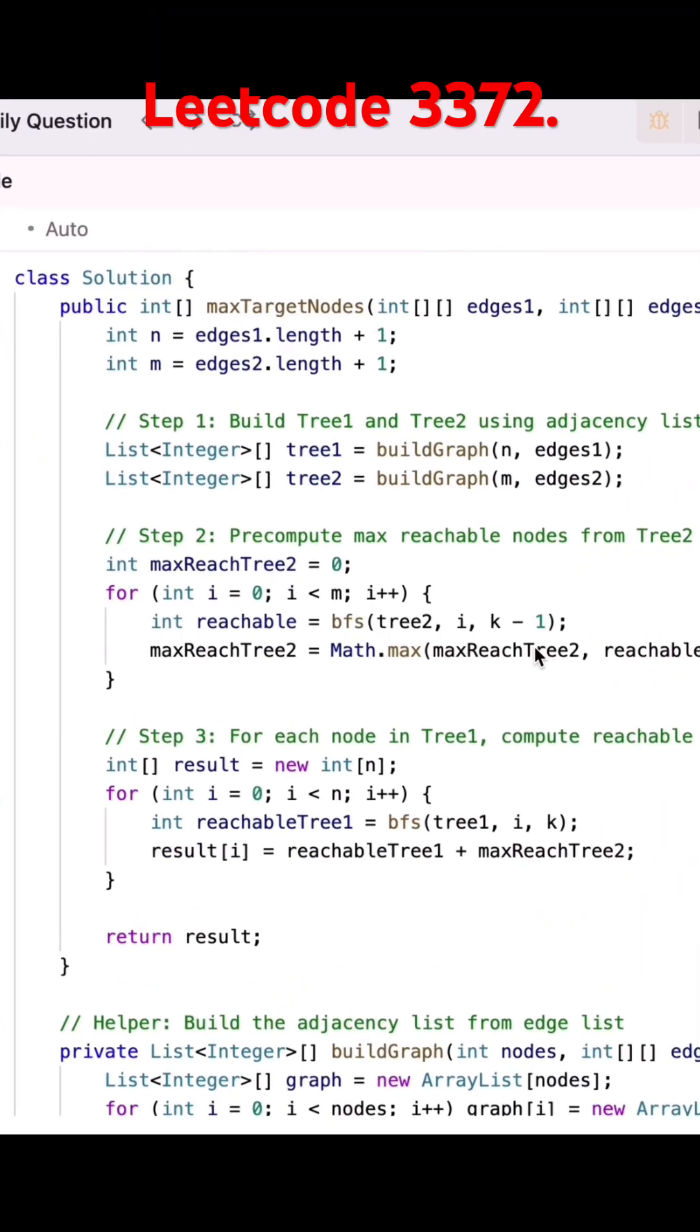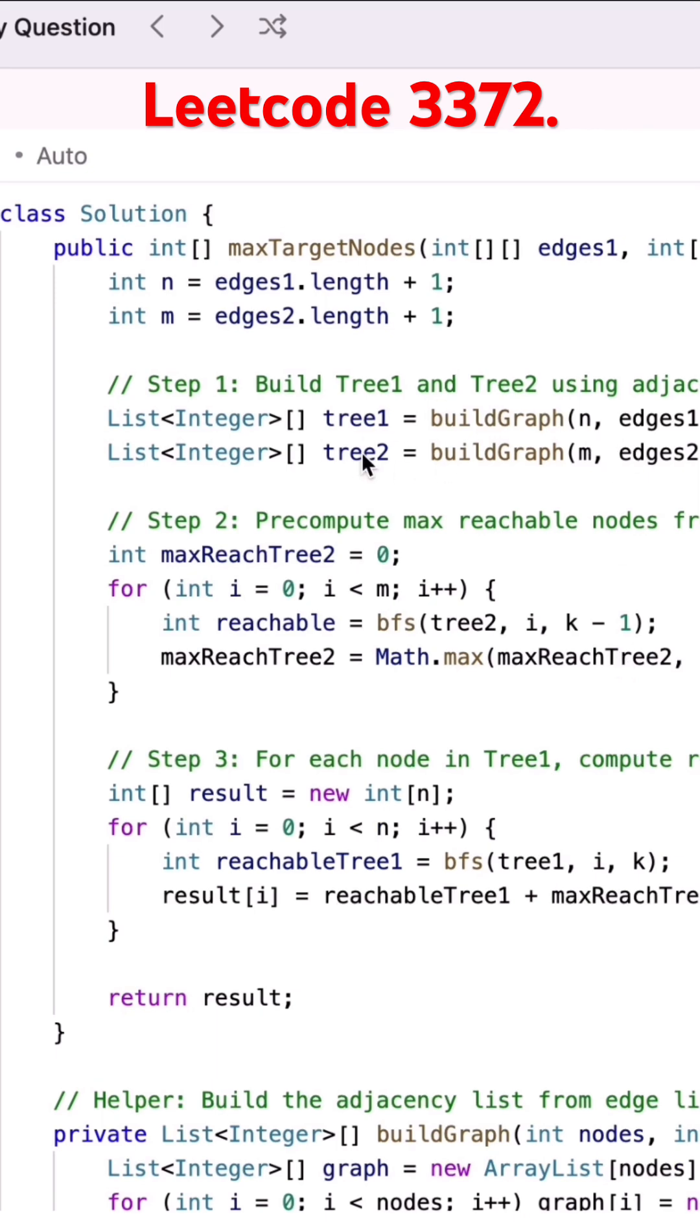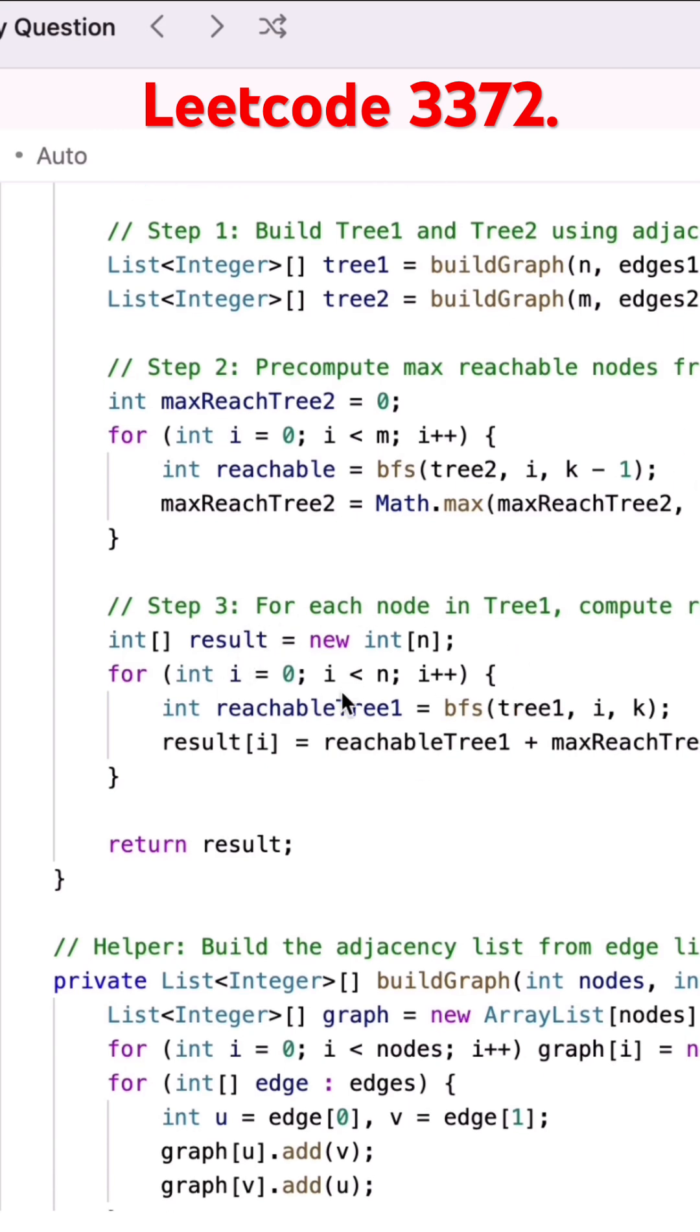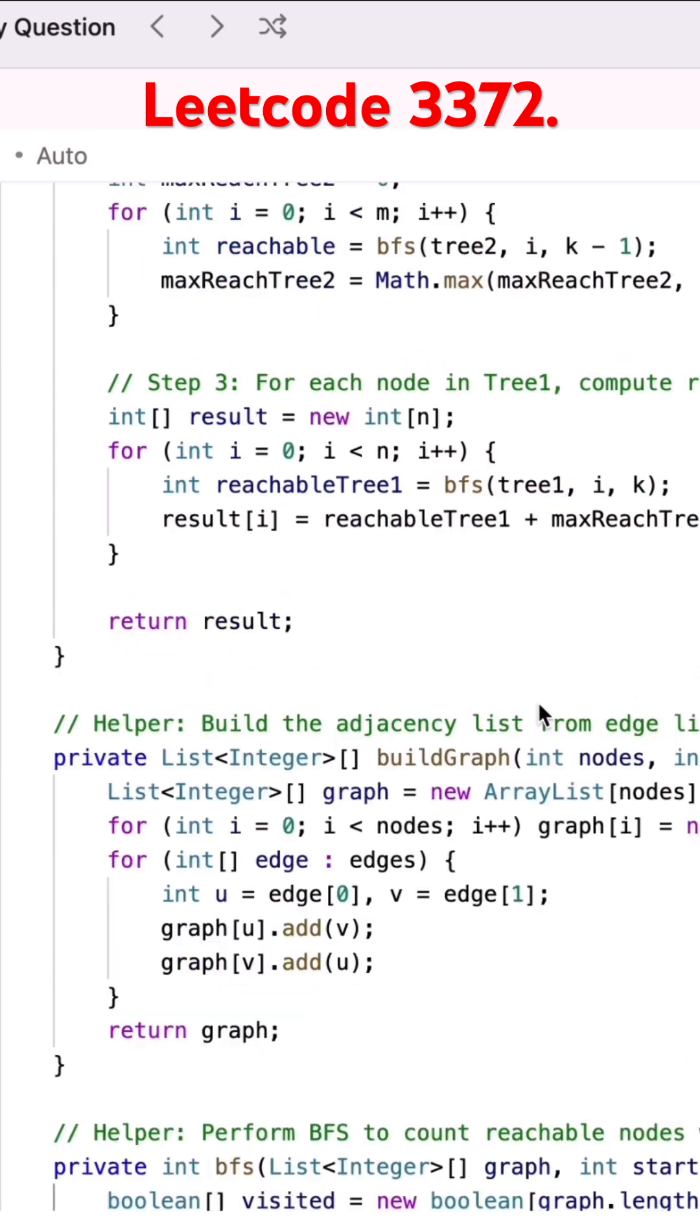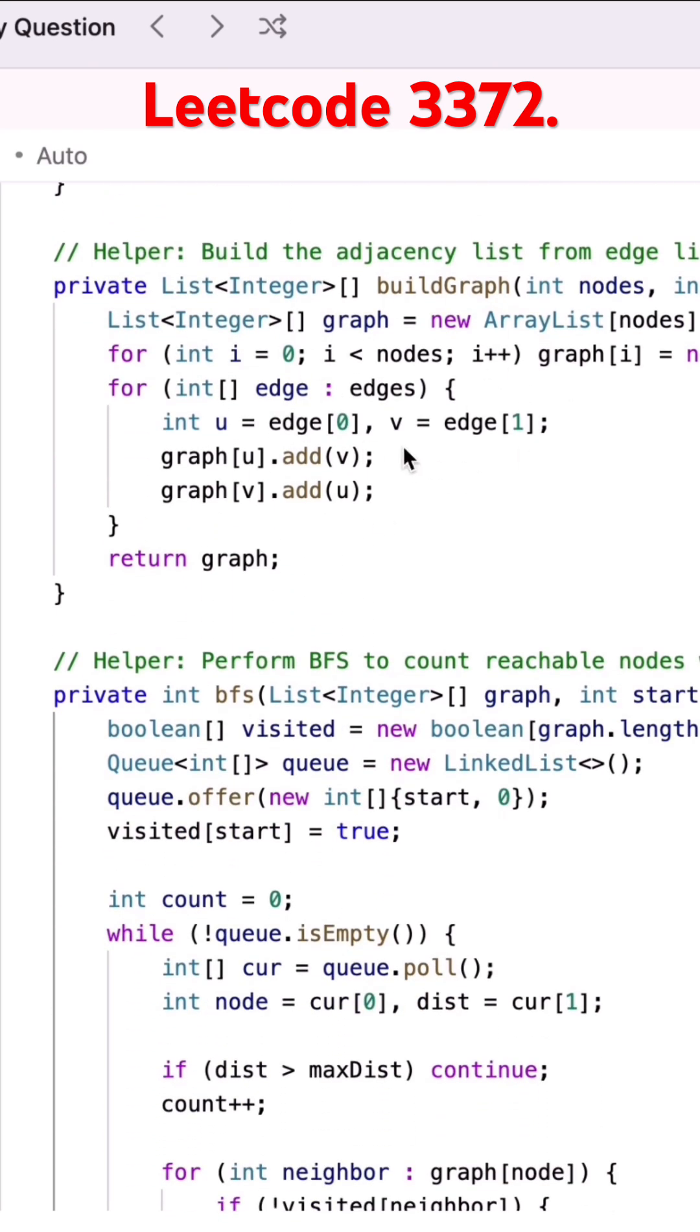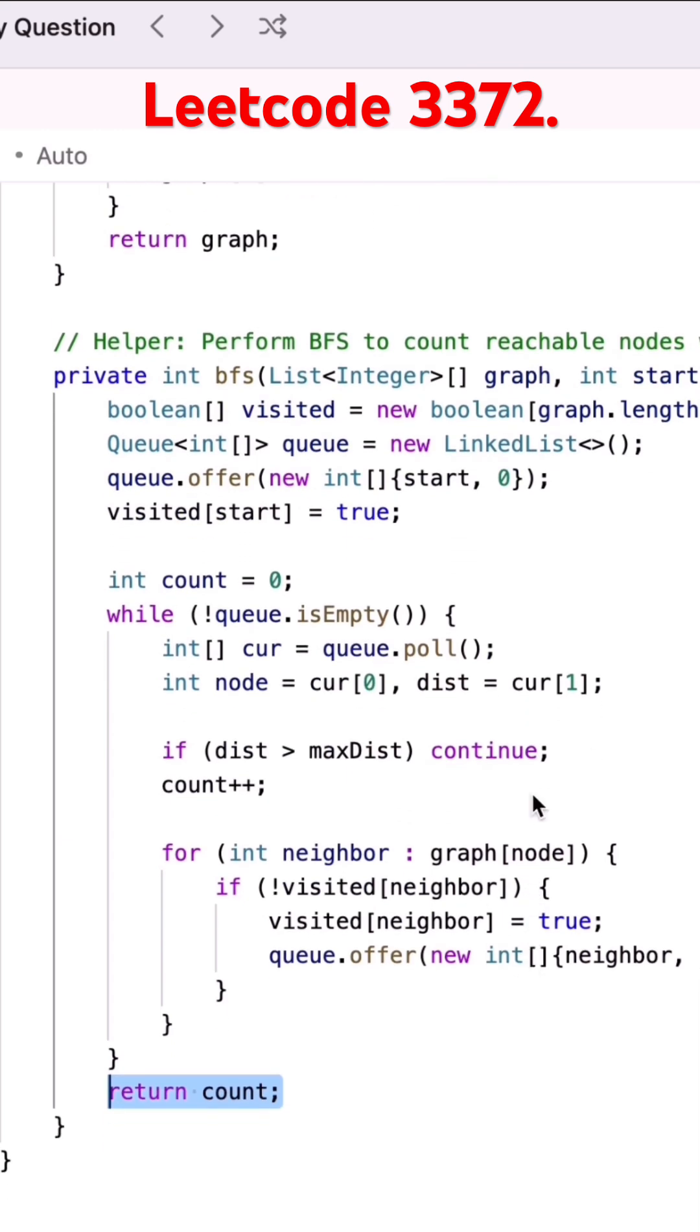First, in step 1, we'll build tree 1 and tree 2 graphs using adjacency lists. Then we'll pre-compute the max number of nodes reachable from any node in tree 2 using k minus 1 steps. For each node in tree 1, we'll compute the reachable nodes in k steps. These are the helper methods that build the graph, and this is the BFS function.